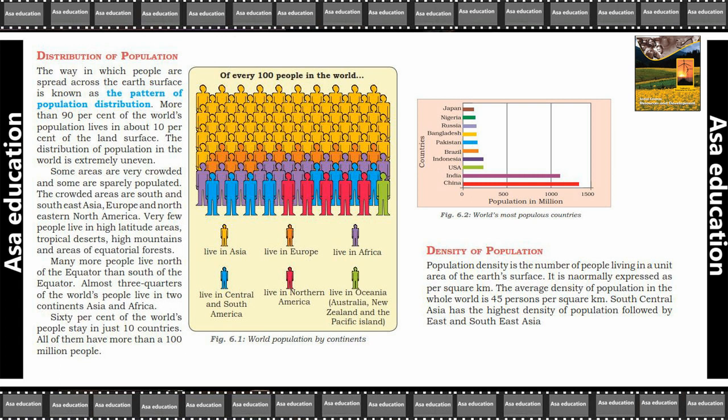Almost three quarters of the world's people live in two continents, Asia and Africa. Kehne ko teen quarter joh poori dunya ki population hain, us mein lagwag doh continents mein — Asia or Africa — jahan peh loog rehti hain.